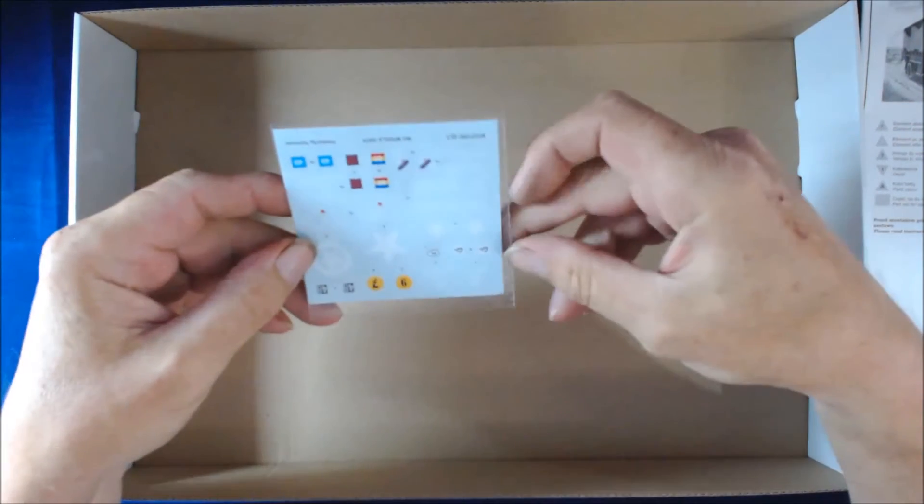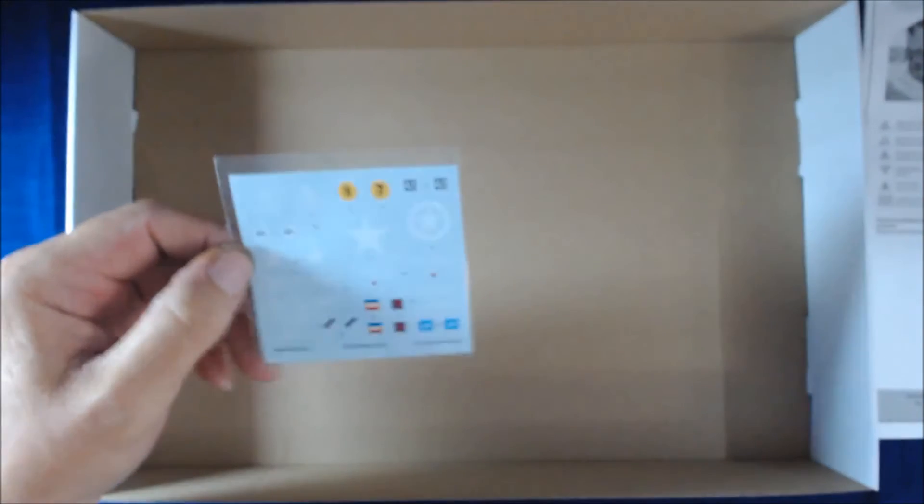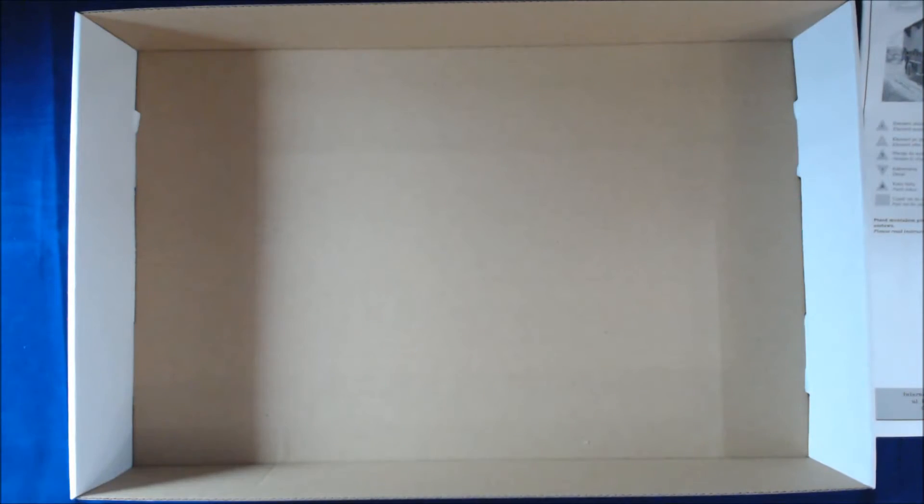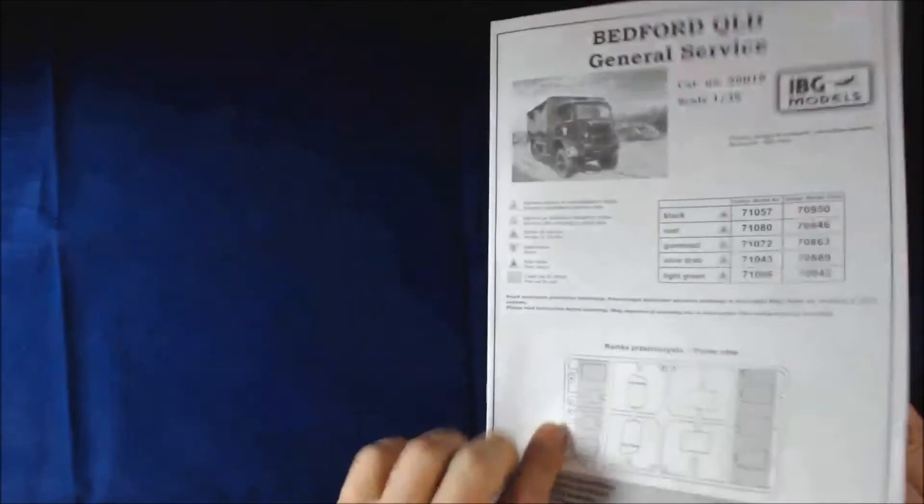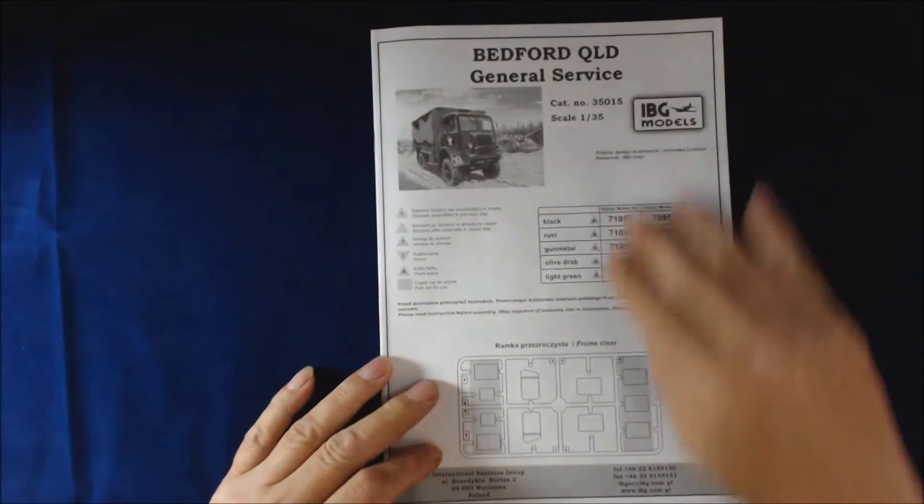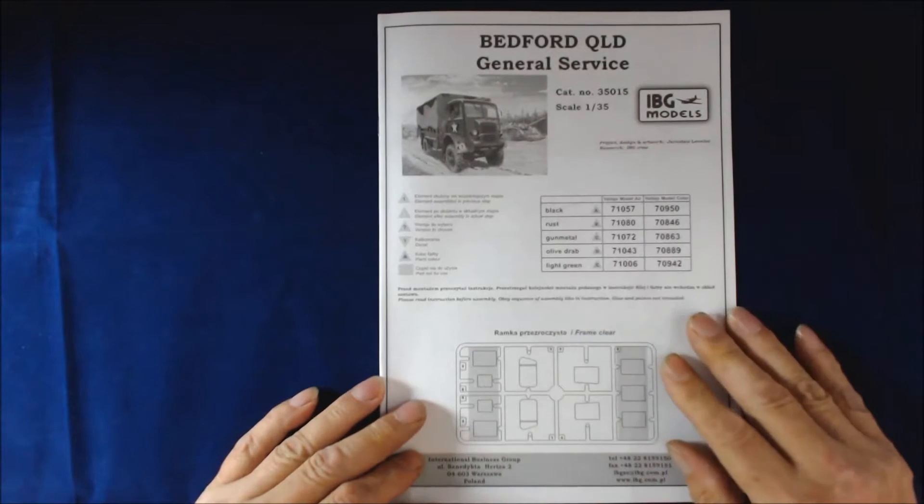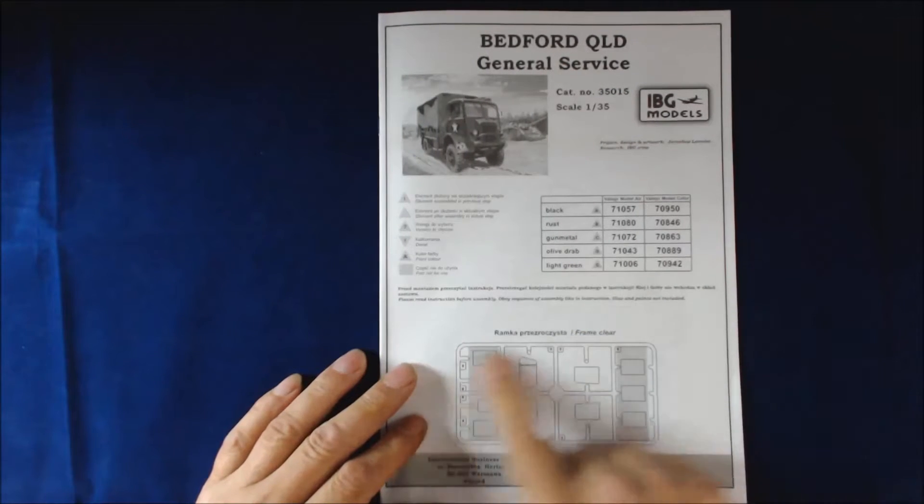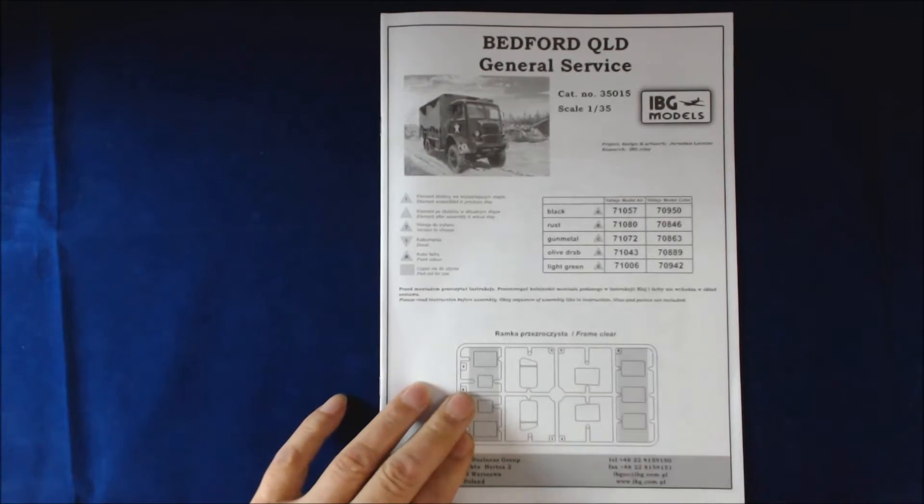One sprue of clear parts, and we have some decals, transfers or stickers. We'll have a look at the workshop manual first, which is a normal IBG booklet that I do like.